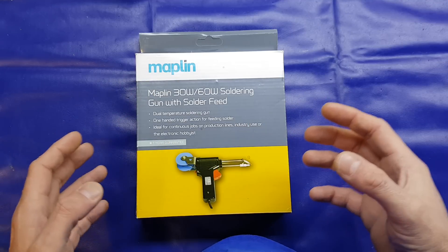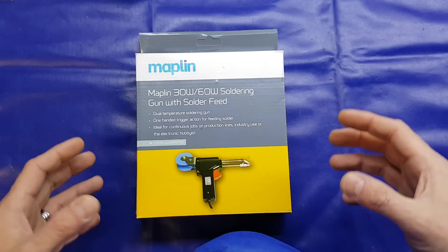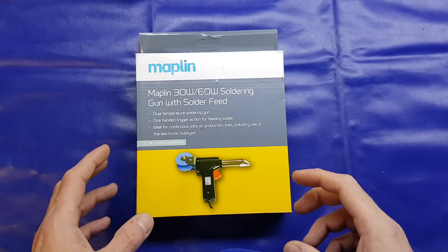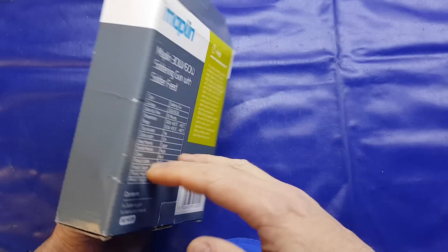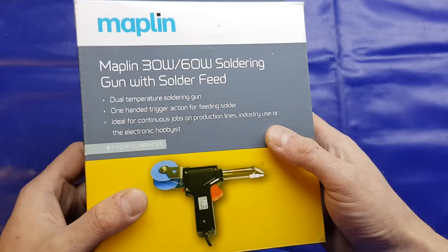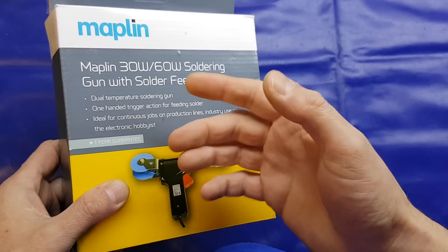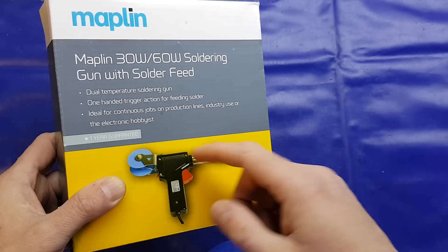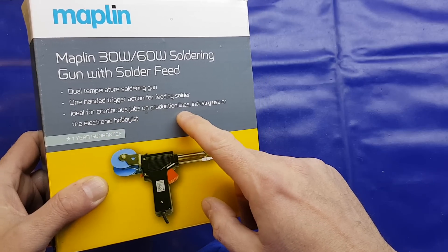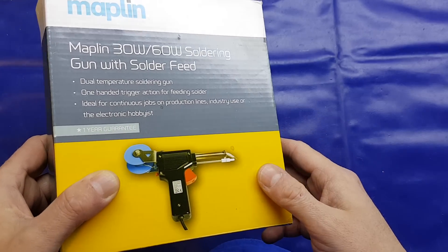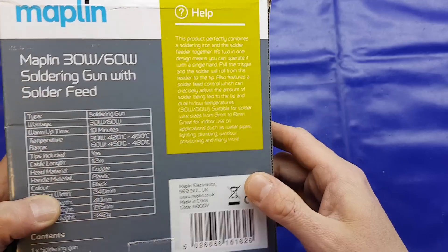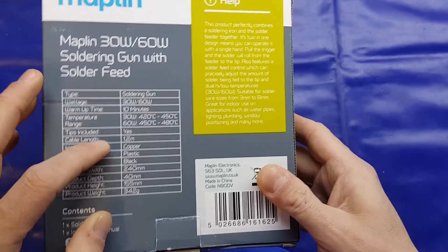I thought we'd take a look at it tonight, see if it's any good. The fact that we can drop it down to 30 watt means it might be usable for the hobbyist. It's not going to burn holes through PCBs and such like. Dual temperature, as I've already mentioned. One-handed trigger action for feeding the solder. Ideal for continuous jobs on production lines, industry use or the electronic hobbyist.